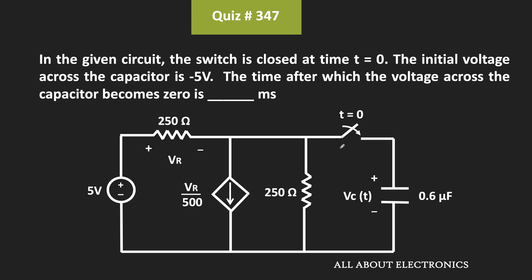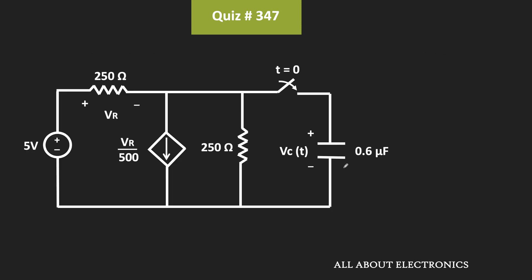Here we have been given that initially the voltage across the capacitor is equal to -5V. We have been asked to find the time after which the voltage across the capacitor will become 0. So the initial voltage across the capacitor is -5V, meaning before this switch is closed, at time t = 0-, the voltage across the capacitor is equal to -5V.